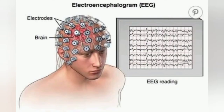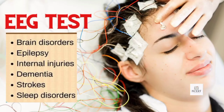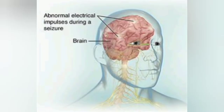EEG is a test that measures electrical activity in the brain using small metal discs attached to the scalp. EEG tests help to identify the cause of symptoms like seizures, memory problems, or behavioral conditions. The main use of EEG is to detect and investigate epilepsy — a condition that causes repeated seizures.